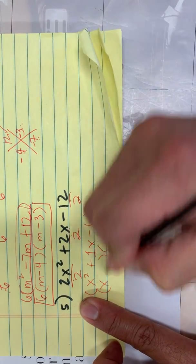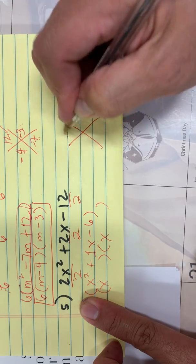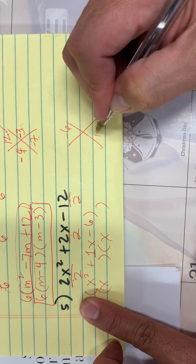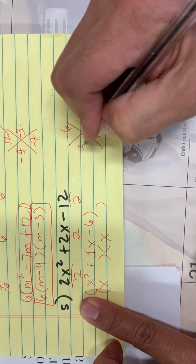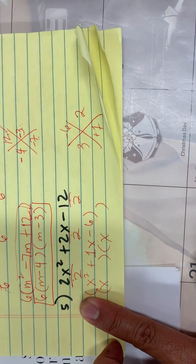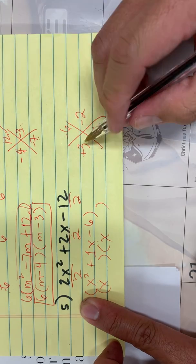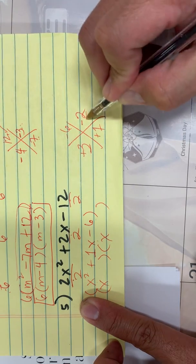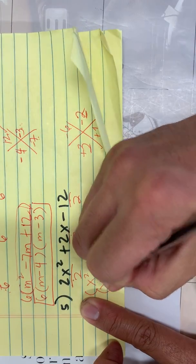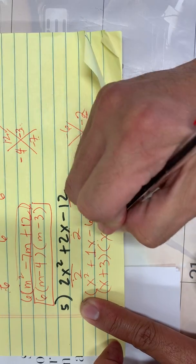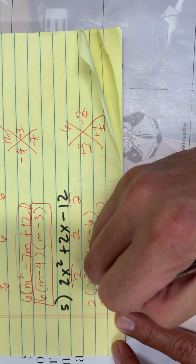What two numbers when you multiply them gives you negative 6, when you add them it gives you positive 1? That will be 3 and 2. Since that's negative, one of them is negative, one of them is positive. I'll pick that this will be positive and negative because when you add 3 and negative 2, it has to be 1. So I'm going to put here plus 3 and minus 2, and drop their GCF here.